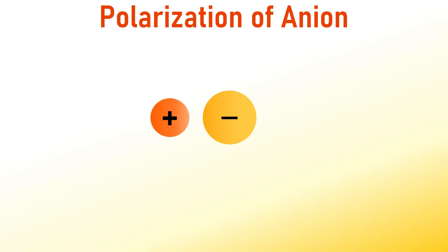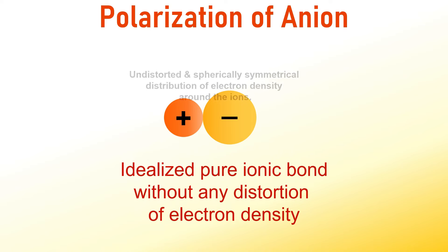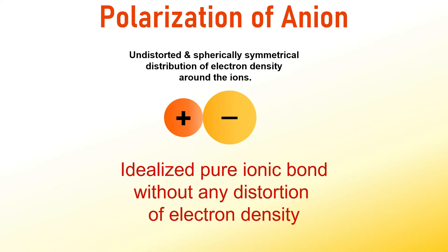You know that a pure ionic bond is essentially an electrostatic attraction between oppositely charged ions without involvement of sharing of electrons between them. In an idealized pure ionic bond, the electron cloud is spherically symmetrical around the nuclei of ions as shown on the screen. Nevertheless, in real scenarios, the situations are not so straightforward.